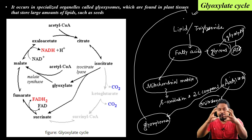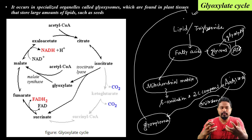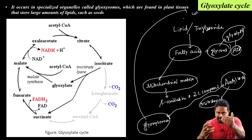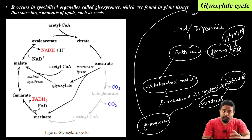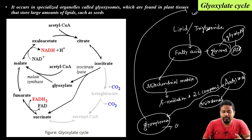The glyoxylate cycle produces a final product. That product is oxaloacetate.